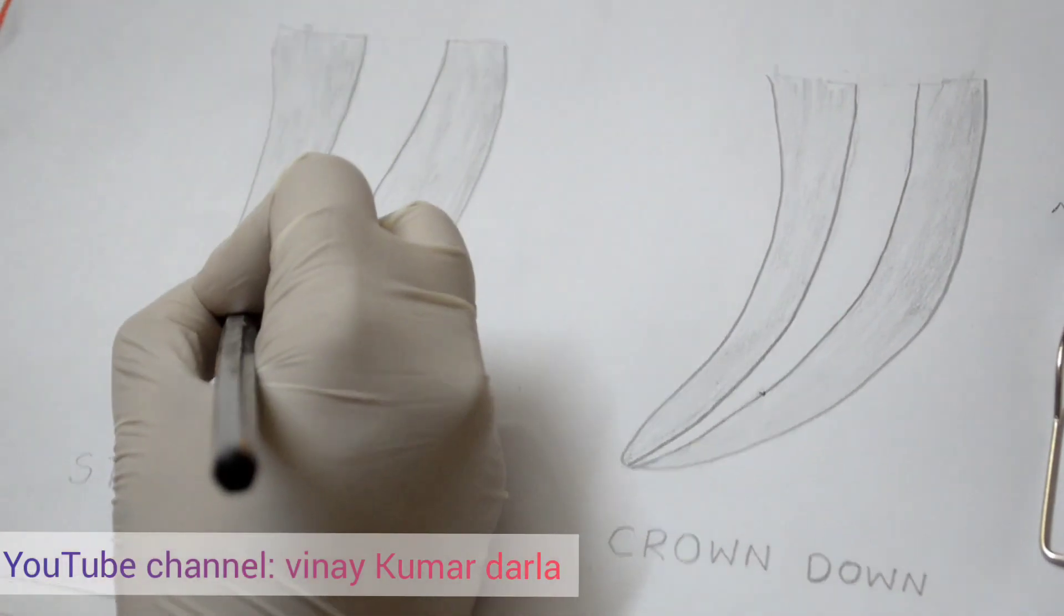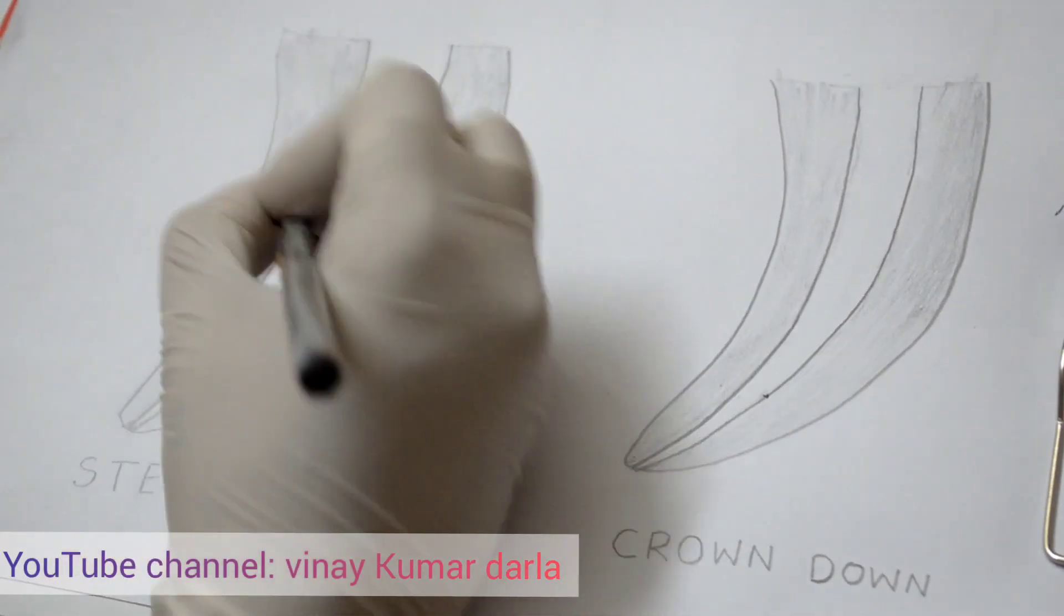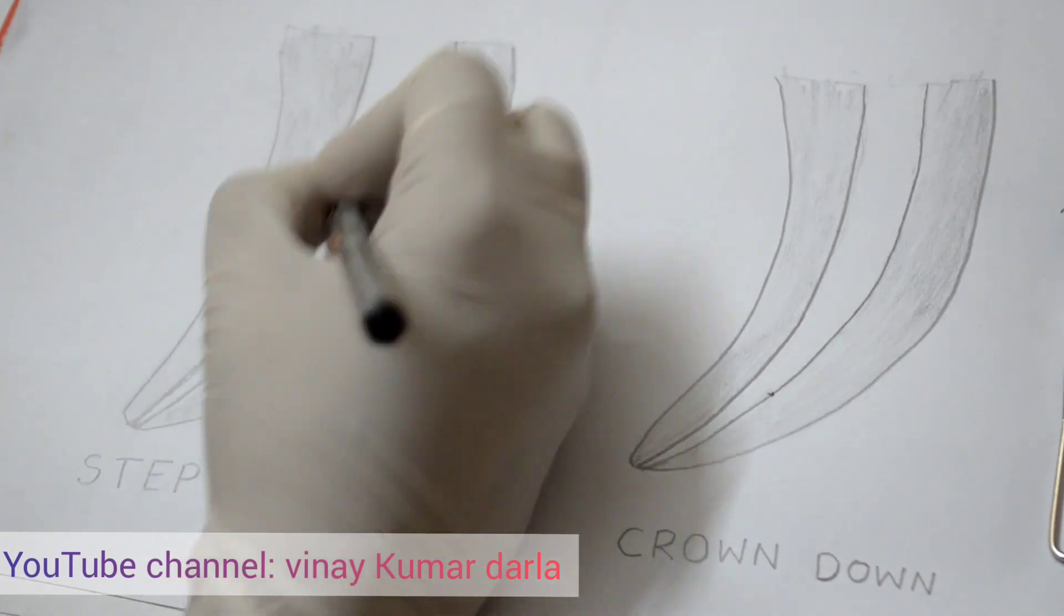In a crown down flareless technique, instead of using hedge files for initial preparation, a 35K file is used to the point of canal binding.